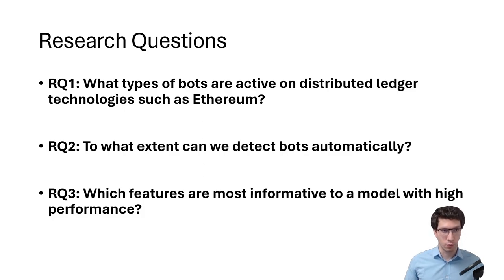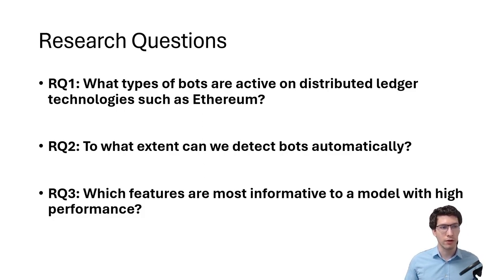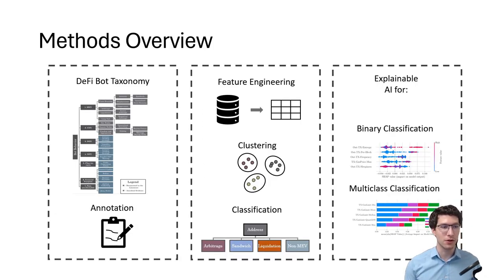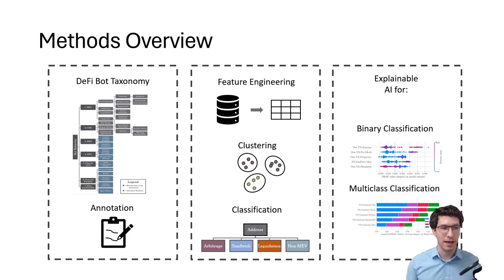Now that you know what our work is about, I will outline the methods used to answer these questions. To find out what types of bots there are, we propose a taxonomy for financial bots on Ethereum, comprising seven bot categories and 24 subcategories.